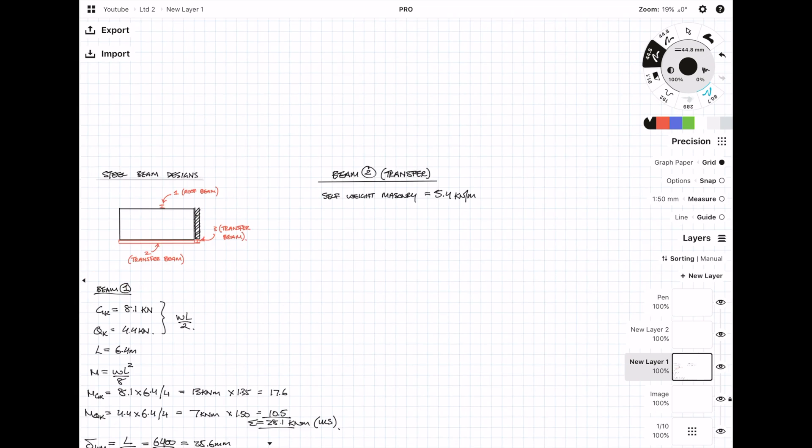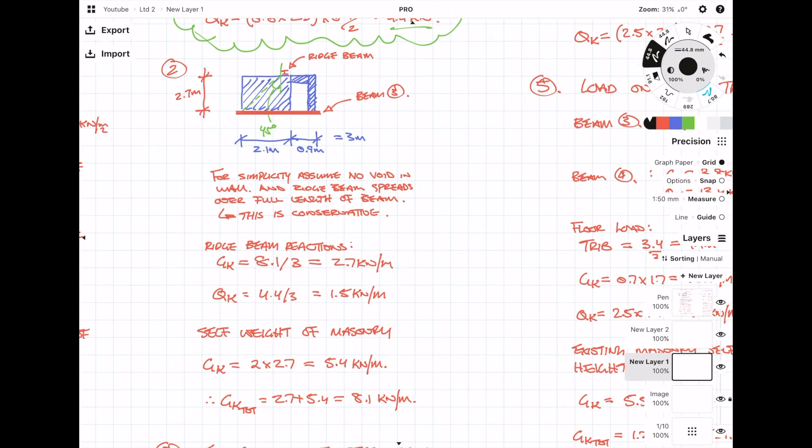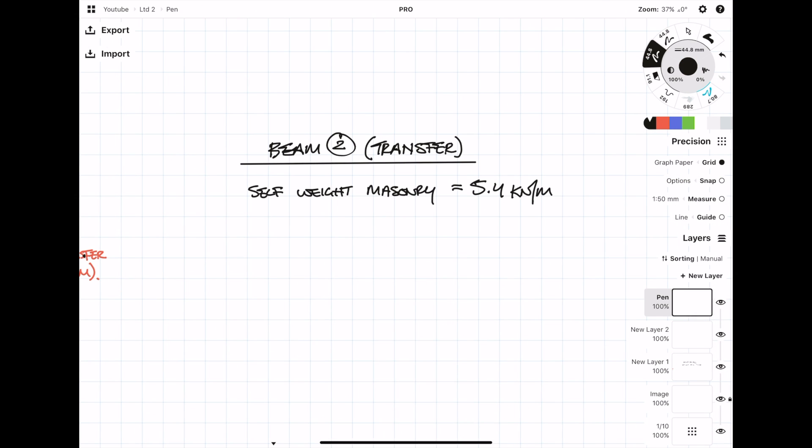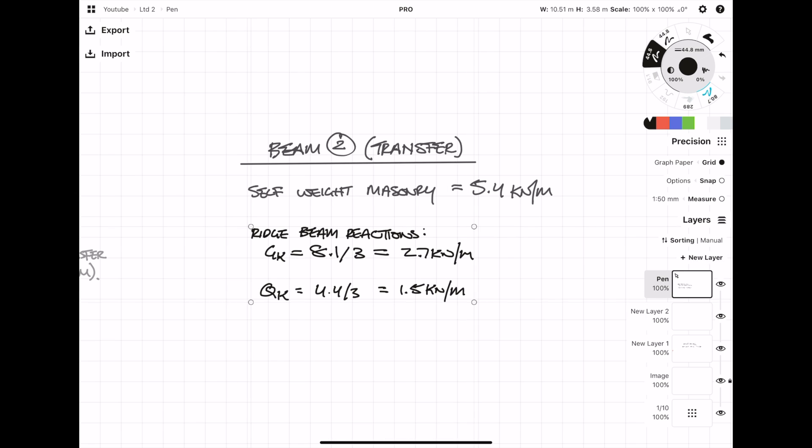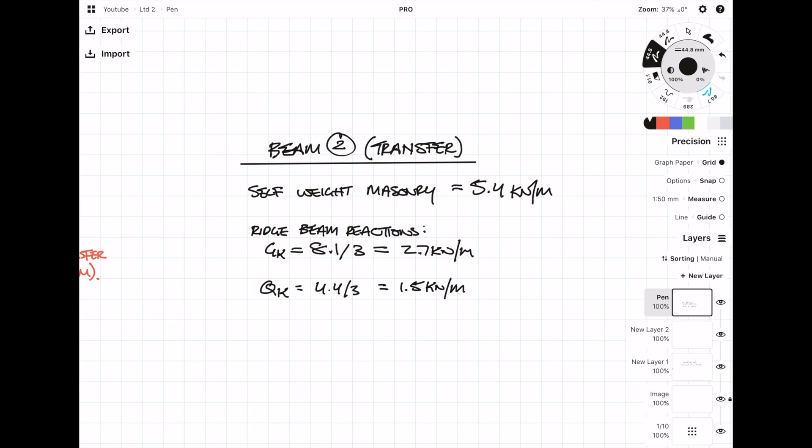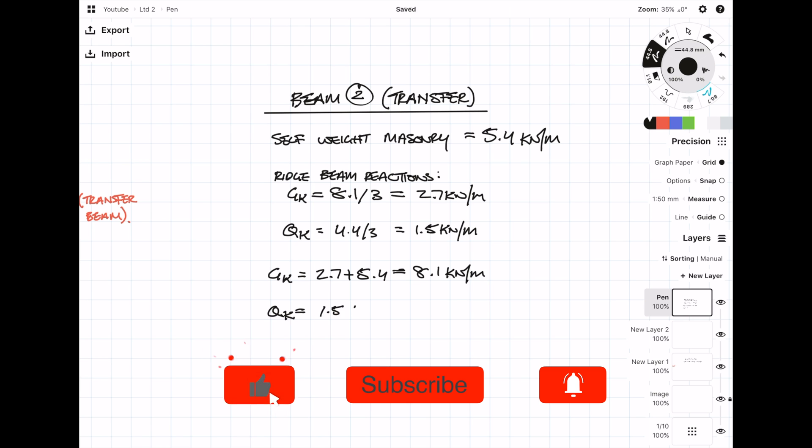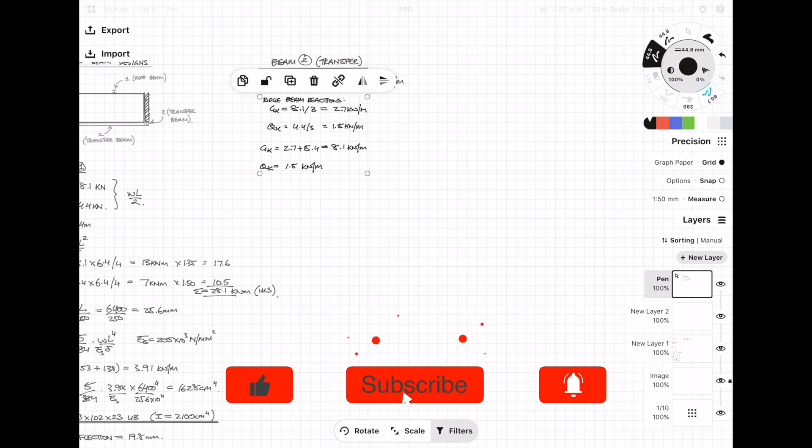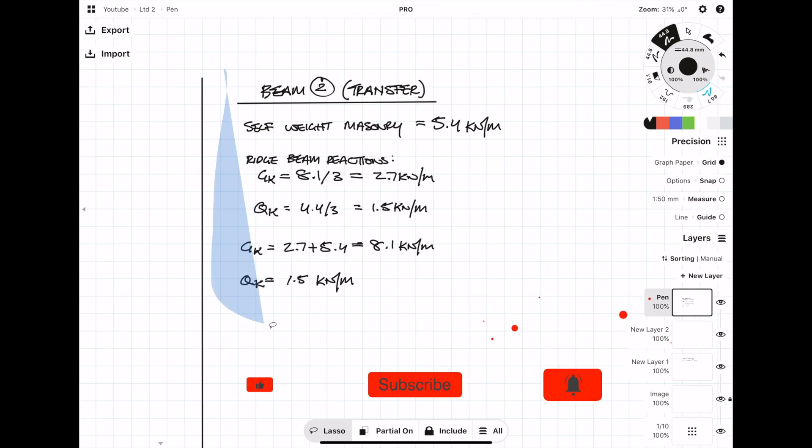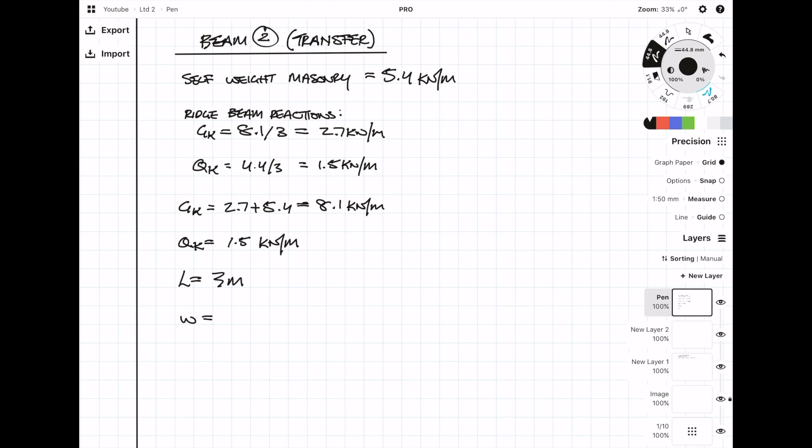In the previous part I already spread the roof beam reactions down into a UDL, so I'm just going to copy across the values here and then sum up the dead loads. Here I'm going to combine the dead and live loads together—the first set being the unfactored load and the second set being the factored load using the Eurocode dead and live load factors.